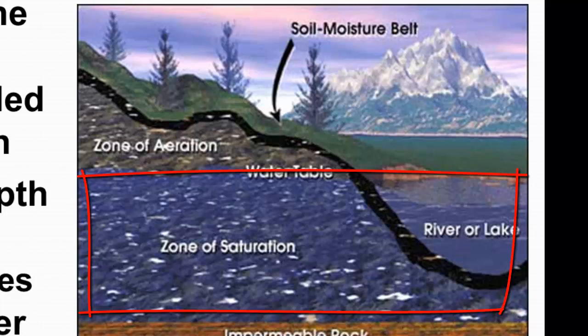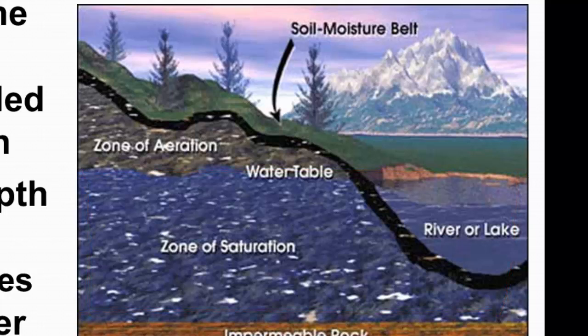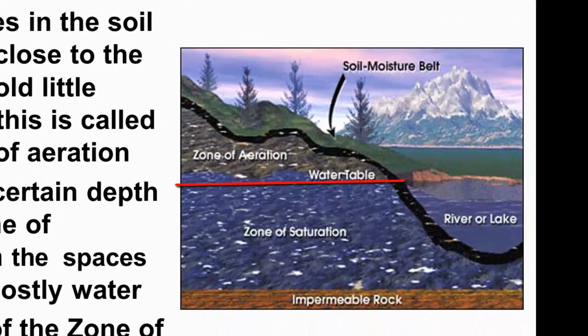The zone of saturation is usually going to be level with surface water — wherever you have surface water, that's probably going to match up with the top of the zone of saturation. And that actual top of the zone of saturation is going to be called our water table.